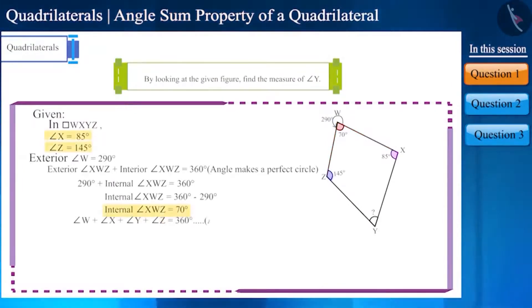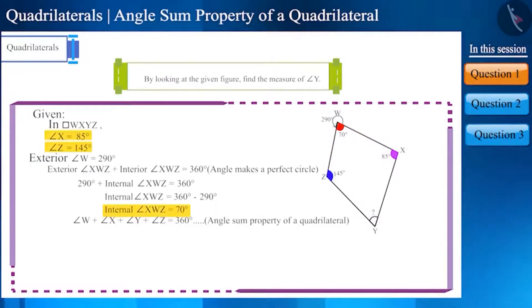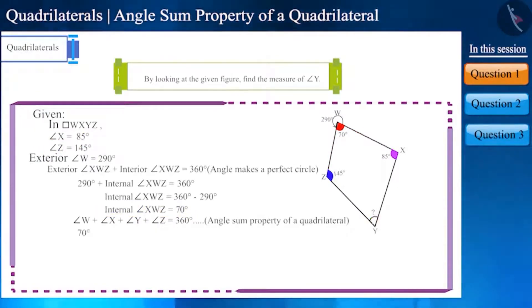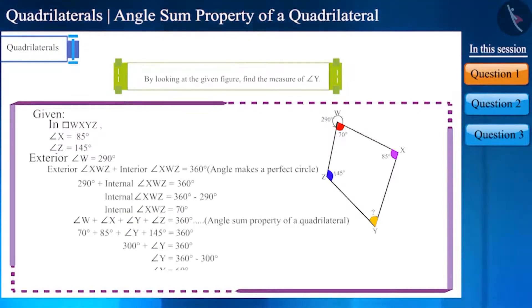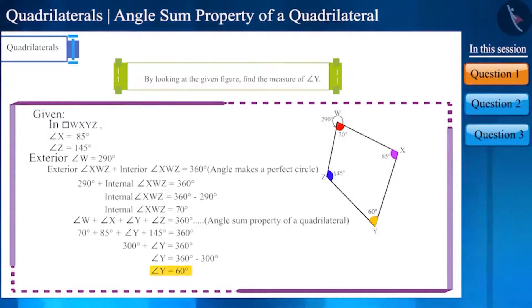Now we have the measurement of three interior angles of the quadrilateral and can easily find the fourth angle. We got the measurement of angle y as 60 degrees.